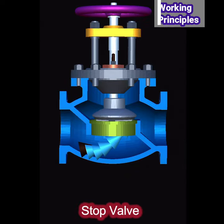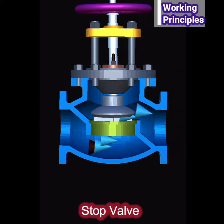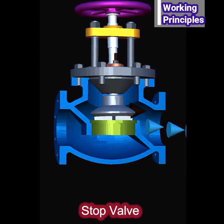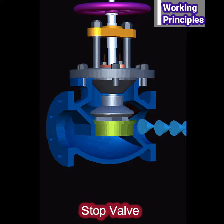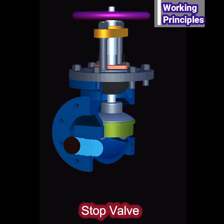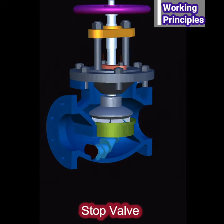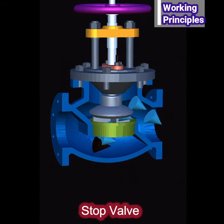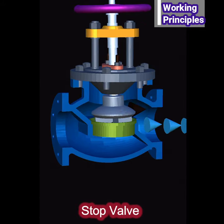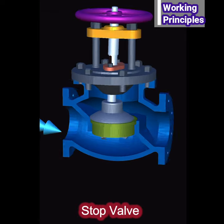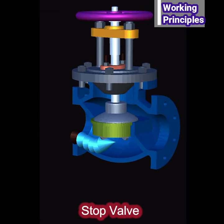Fluid stop valve is used to regulate the flow of fluid from one section to another. The spindle is rotated by help of a hand wheel. Due to rotation of the spindle, the valve moves up and down.